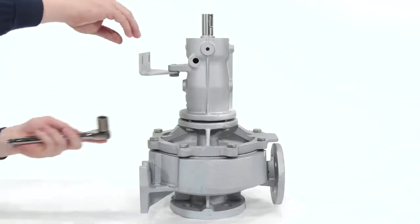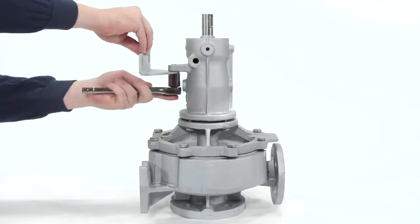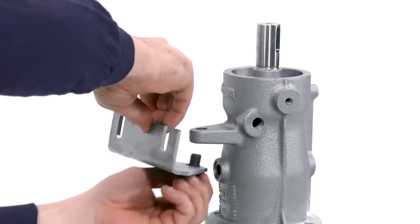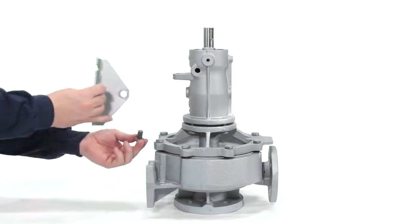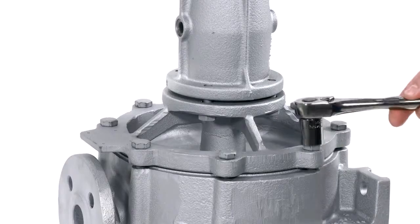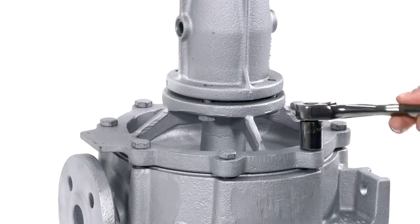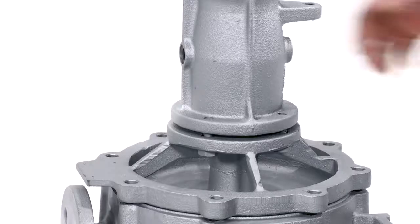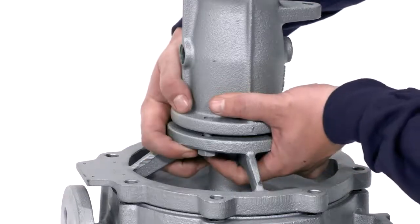Remove the pump foot using a 19mm wrench. Use a 17mm wrench to remove the 8 pump casing cover bolts.